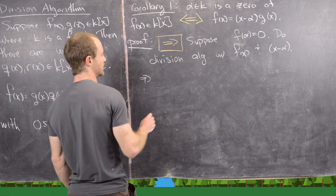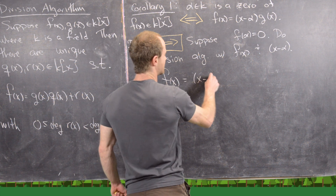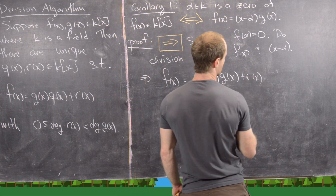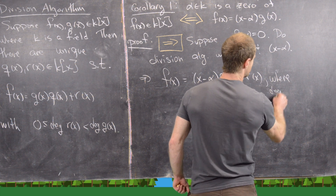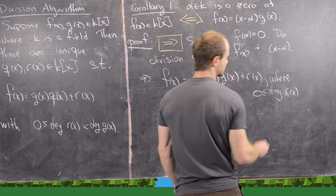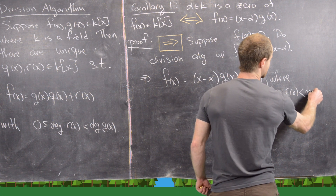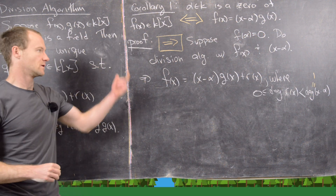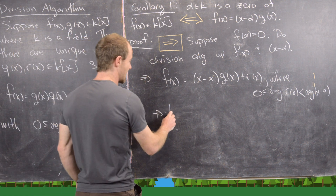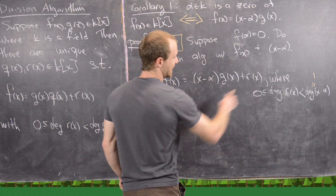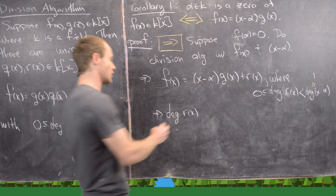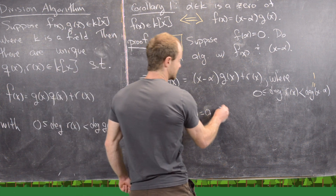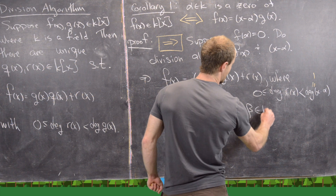Applying the division algorithm gives us f(x) = (x − α)·g(x) + r(x), where the degree of r(x) is greater than or equal to zero and strictly less than the degree of (x − α). The degree of (x − α) equals one, so the degree of r(x) must equal exactly zero — meaning r(x) is just an element β from the field k.